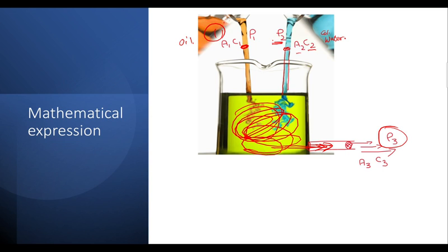If you think of it, the volumetric flow rate equation is not going to change. The volumetric flow rate V̇₁, V̇₂, and V̇₃ is not going to change, so V̇₁ + V̇₂ = V̇₃. This is the expression.